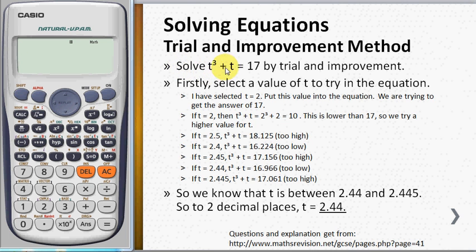First, we want to solve t³ + t = 17, but the calculator variables available are a, b, c, d, e, f, x, y, m. So I use x instead of t: x³ + x. Then I press calc to substitute a value of 2.